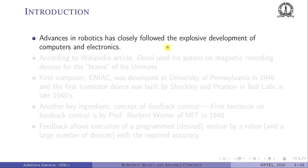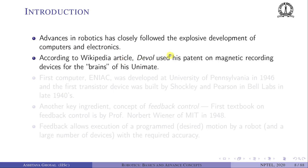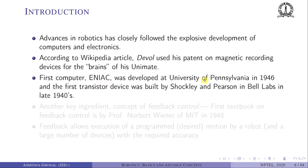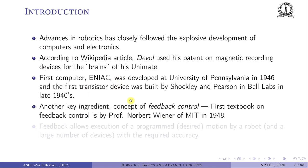The advances in robotics have closely followed the explosive development of computers and electronics. Devol used his patent on magnetic recording devices as the 'brain' of the Unimate — using magnetic recording to program and reprogram the robot. The first computer, ENIAC, was developed at the University of Pennsylvania in 1946, and the first transistor device was built by Shockley and Pearson at Bell Labs in the 1940s. Both are very important milestones in the history of robotics.